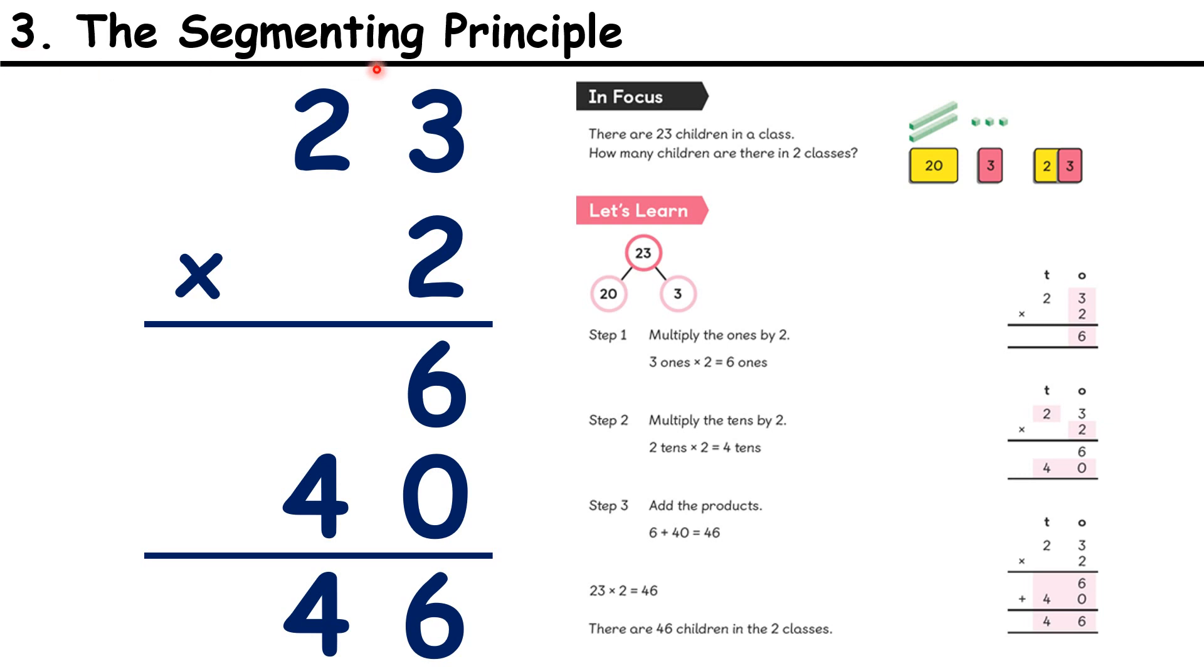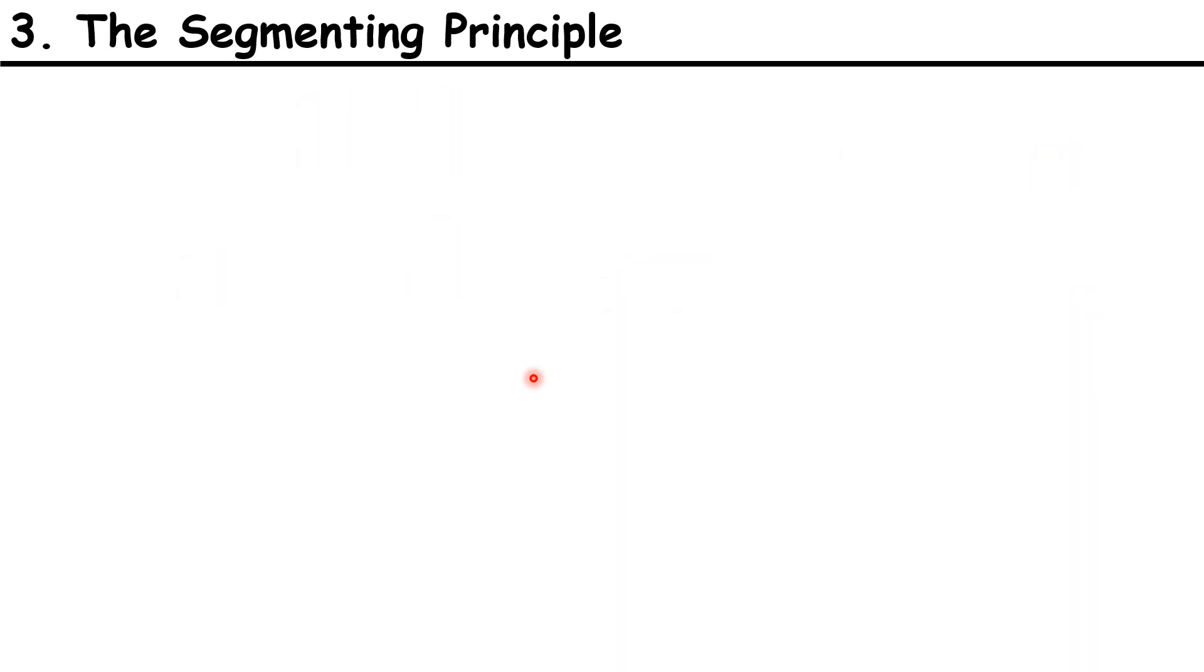Our third principle is the Segmenting Principle. This relates to the Worked Example Principle. Children will feel overwhelmed if all the new information is presented in one go. Showing too much at once makes it harder to process. So rather than showing the complete solution straight away, make sure your board slides are structured to reveal the new information gradually, one step at a time.